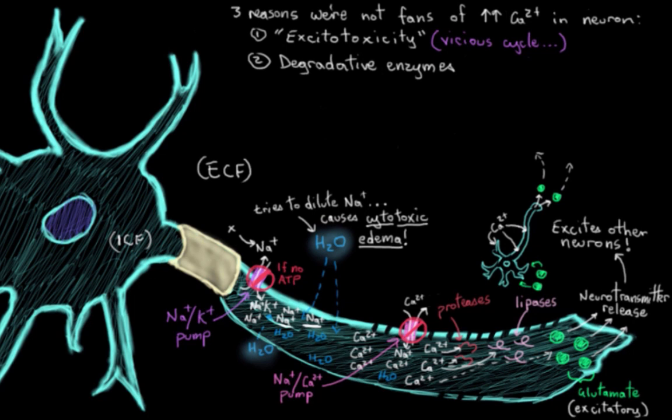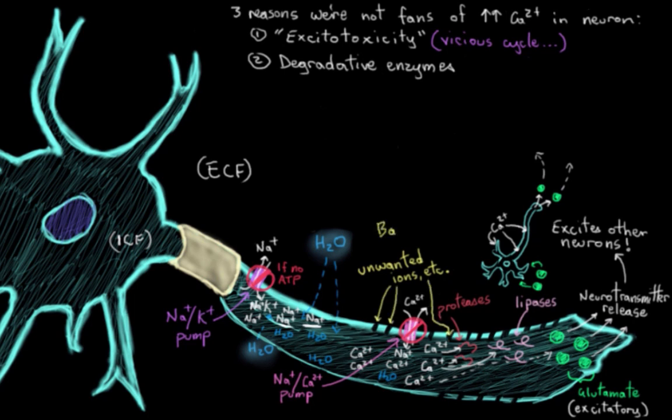So you can imagine that if your cell membrane starts to break down, all sorts of other ions and harmful chemicals will enter the neuron and start to cause damage. So that's no good.